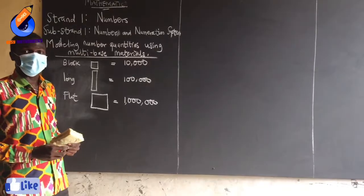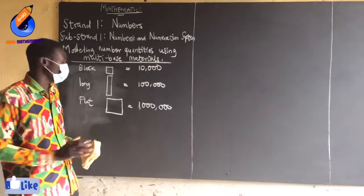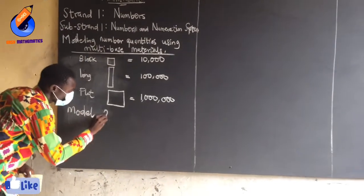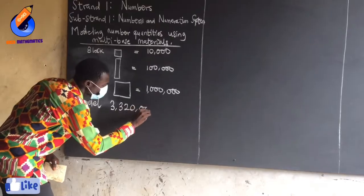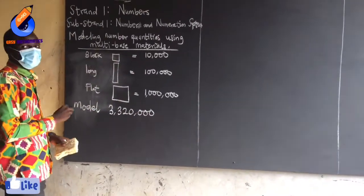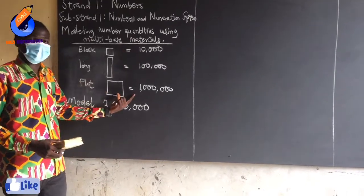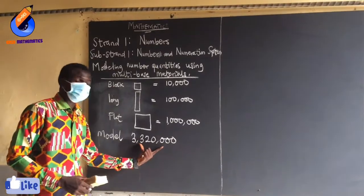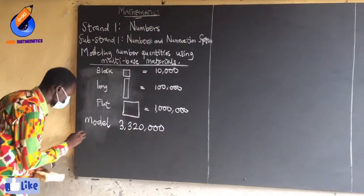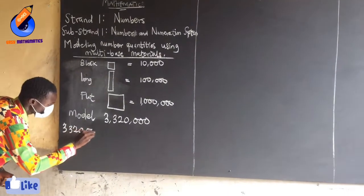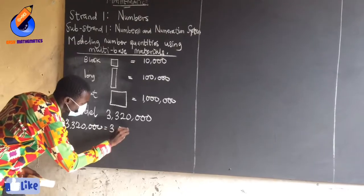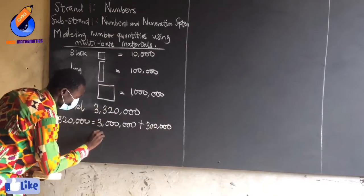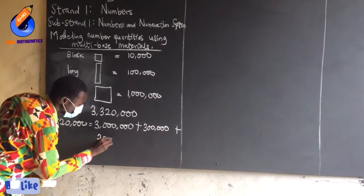So let's look at how we can model a given number quantity using the multibase material. Let's say we are to model 3,320,000 using the multibase materials. Before you can do that, you have to first expand this number. Expanding gives me 3,000,000 plus 300,000 plus 20,000.